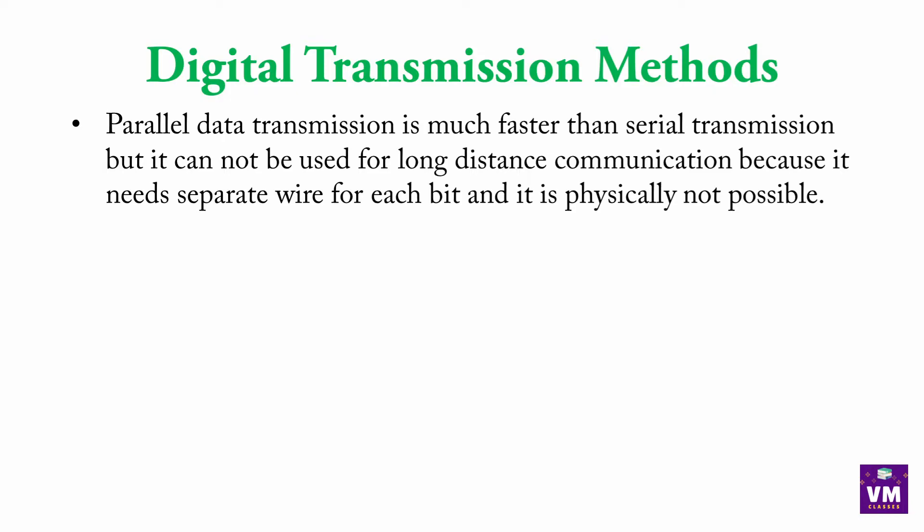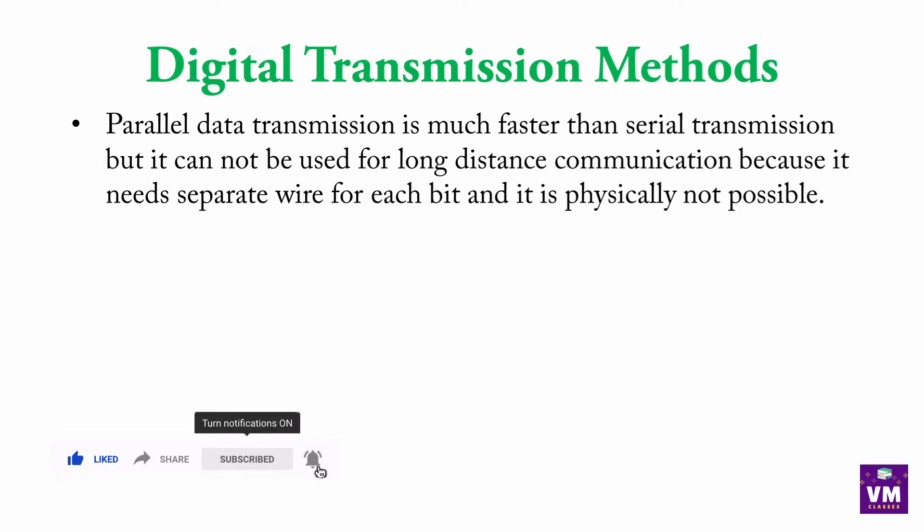Parallel data transmission is much faster than serial transmission, but it cannot be used for long distance communication because it needs a separate wire for each bit and it is physically not possible. Parallel data transmission में हम कम time में ज़्यादा data transfer कर सकते हैं, बट हर एक point को दूसरे point से connect करना होता है। Serial में one by one होता है — first को second से connect किया, second ने third को, third ने fourth को। इसलिए parallel data transmission long distance communication के लिए physically possible नहीं होता।